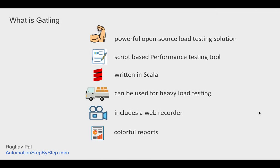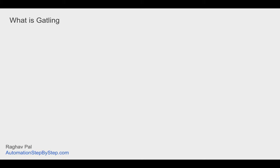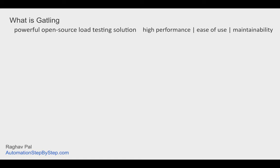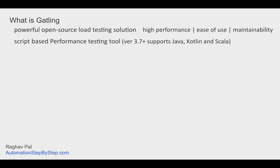This is what Gatling is - that is the introduction. You can take a screenshot and keep it handy. Gatling is an open source performance testing solution. It is very powerful, used for high performance, easy to use, easy to maintain, and script-based. From version 3.7 onwards it has support for Java, Kotlin, and Scala. Prior to this version the only scripting option was Scala.